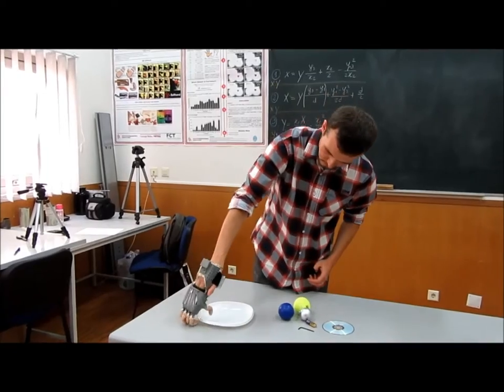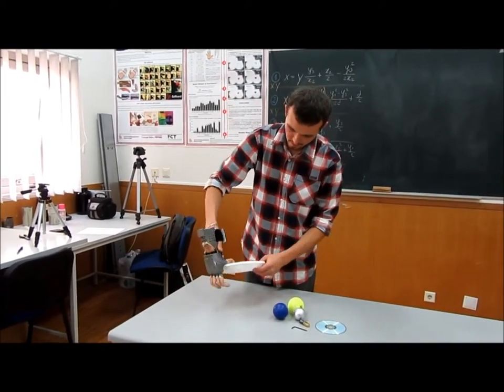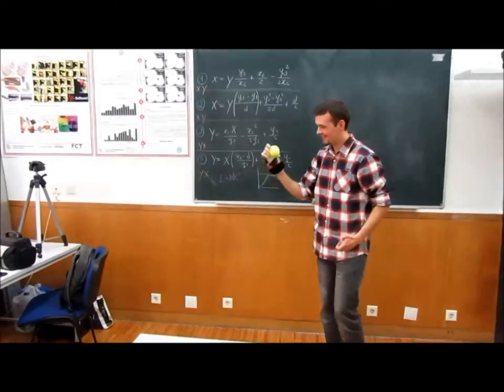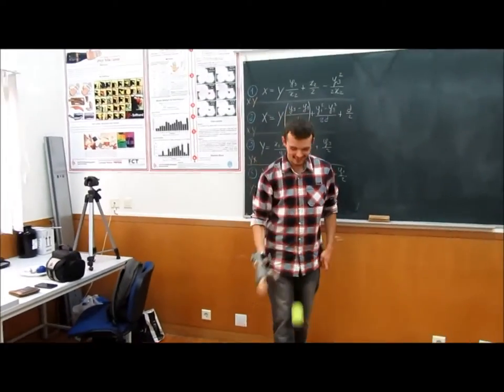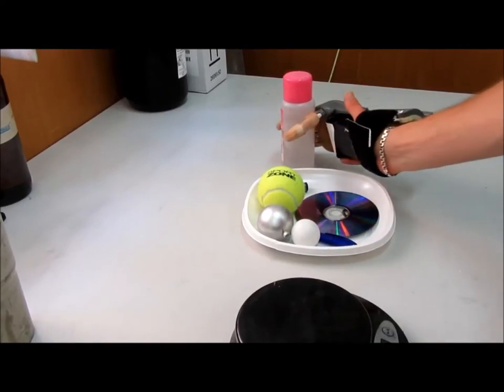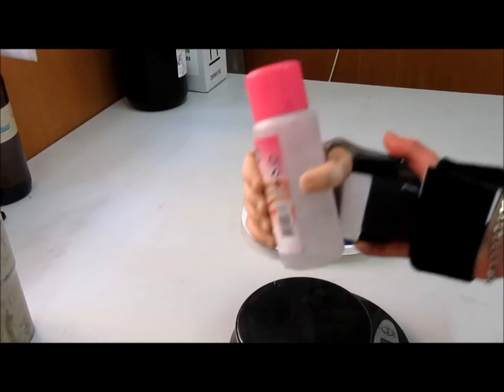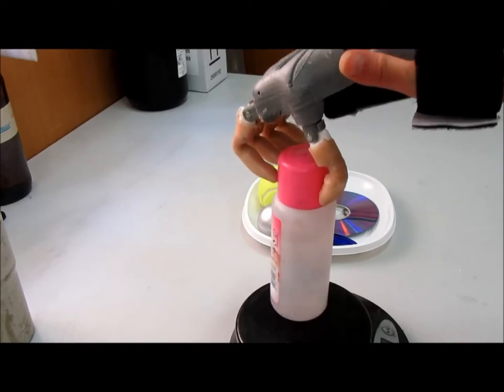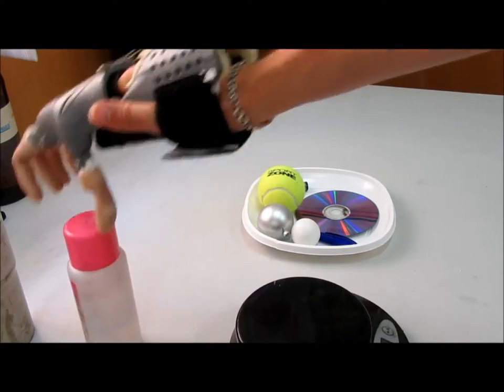As a start point, we tested a 3D printed wrist-actuated hand from the Enable community against the human grasp benchmark. We found out that the user could achieve 5 out of 33 human grasp forms. After 2 years of research, we developed a solution that can achieve 24 grasp forms, including many of the precision and power grasps.